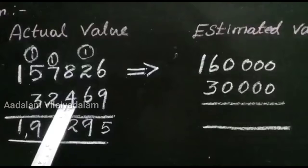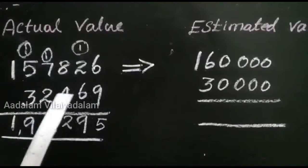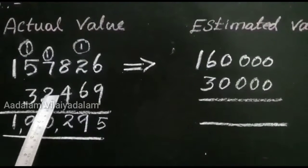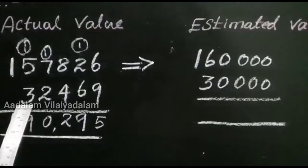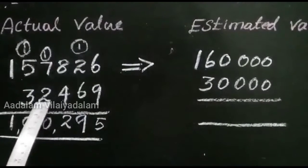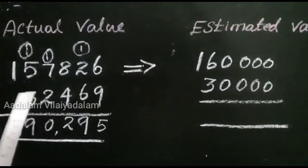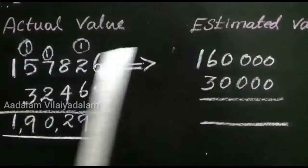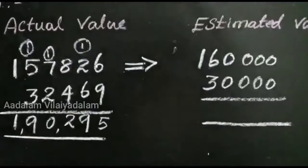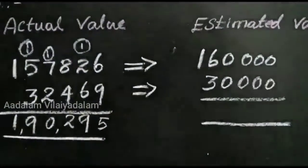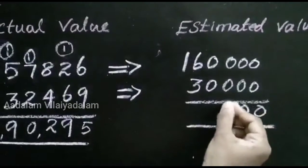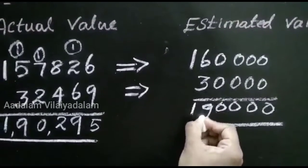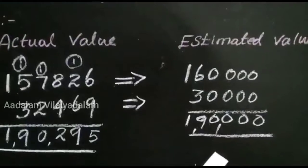Next, the estimation value of 32,469 to the nearest 10,000 place. First, identify the 10,000 digit: 1, 10, 100, 1000, 10,000. The second digit is less than 5, so no need to change the first number — write it as it is. 3 remains, and the rest, we put 0. The estimation value is 30,000. Now add the numbers: 1,60,000 plus 30,000 equals 1,90,000. That is the estimation value of the sum.